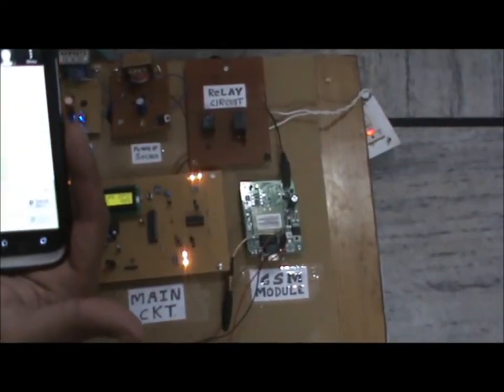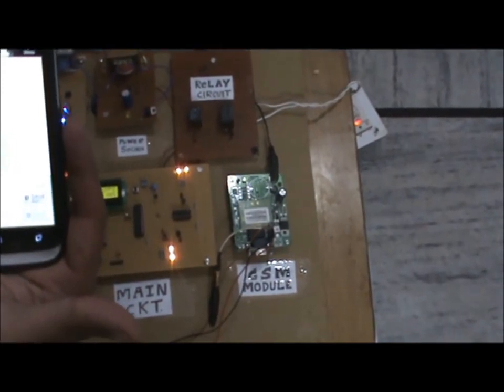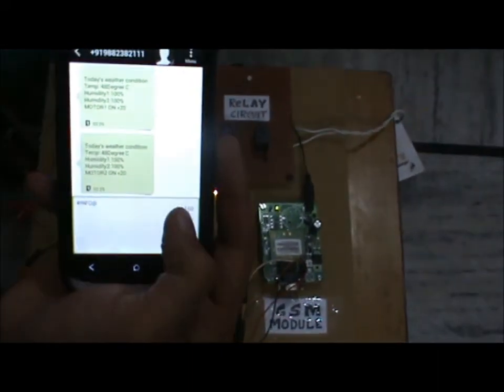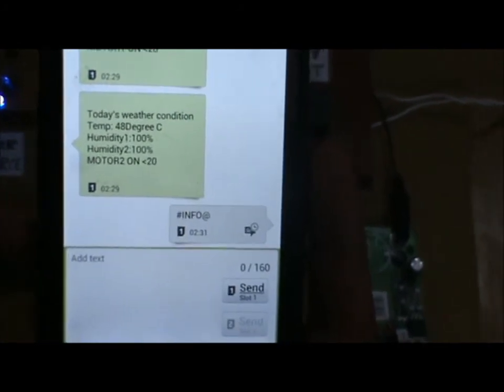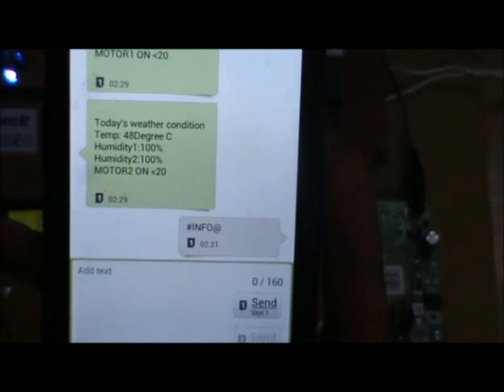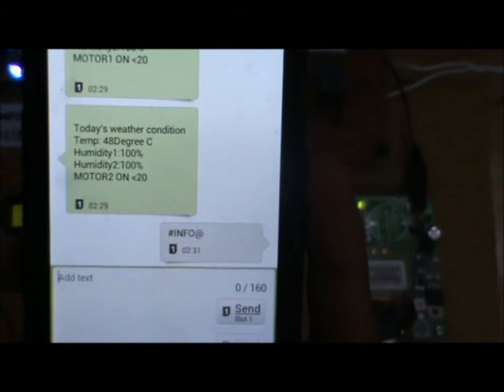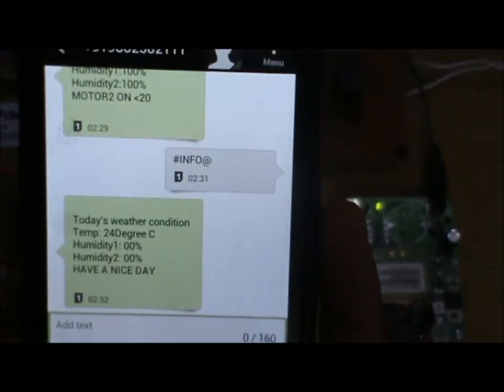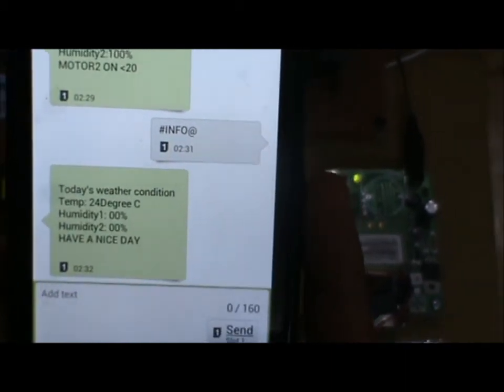User can receive the information about the temperature and humidity of the soil at any time by sending the command hash info. Now, as the command is sent, we will receive info on our mobile. As you can see, the temperature and humidity are displayed here.